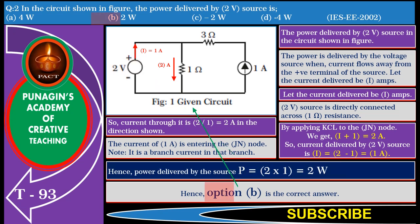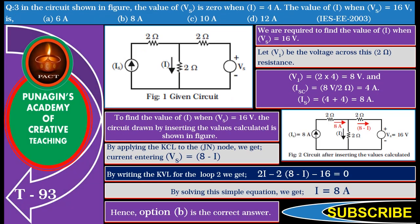Hence, option B is the correct answer. Friends, this question is also very simple. In this question, we are required to find the value of I when Vs equals 16 volts.